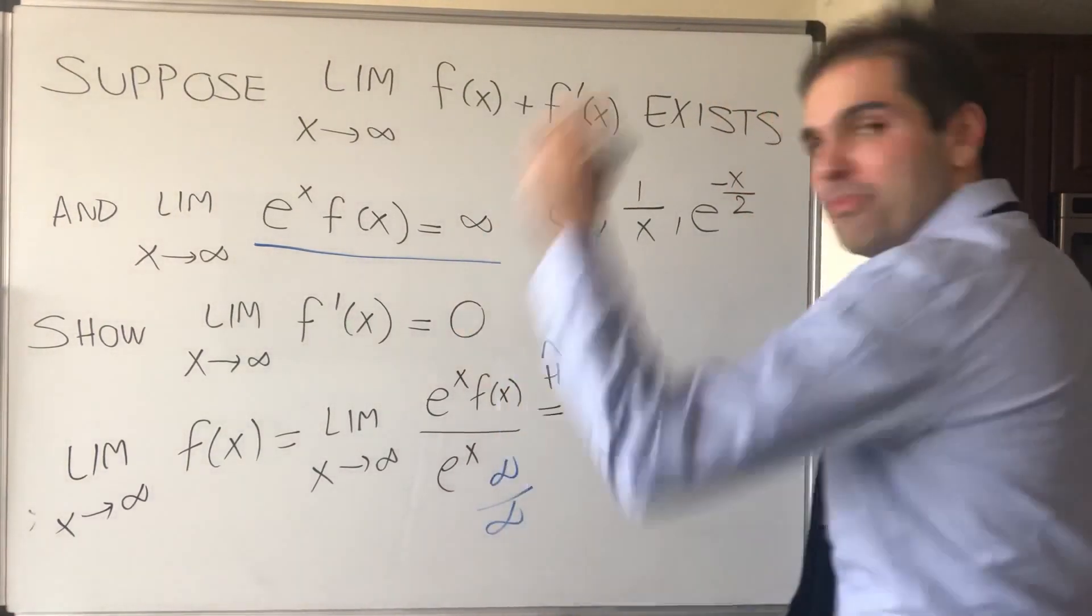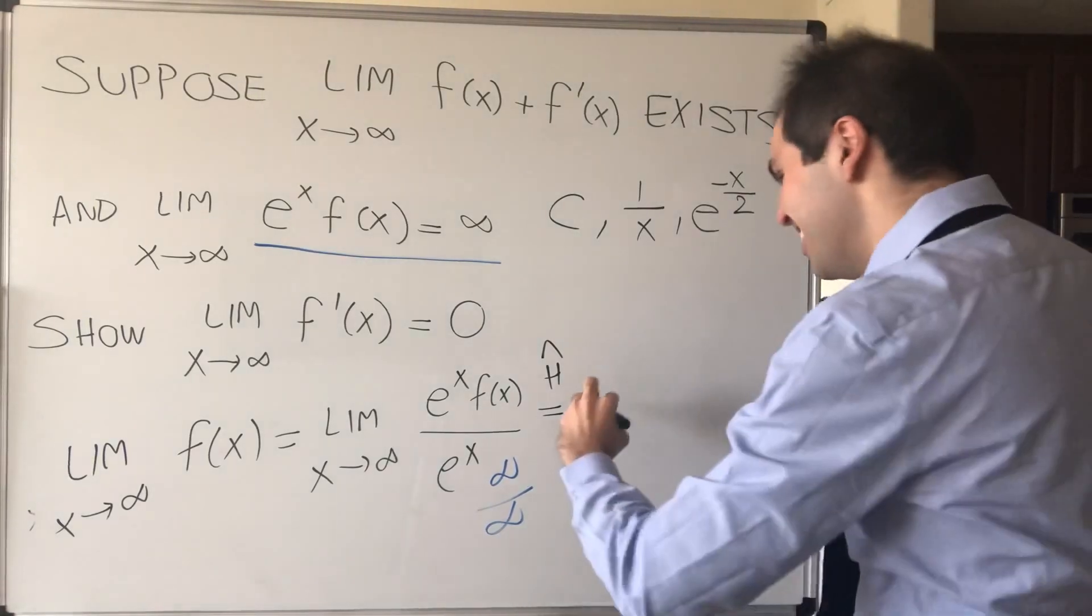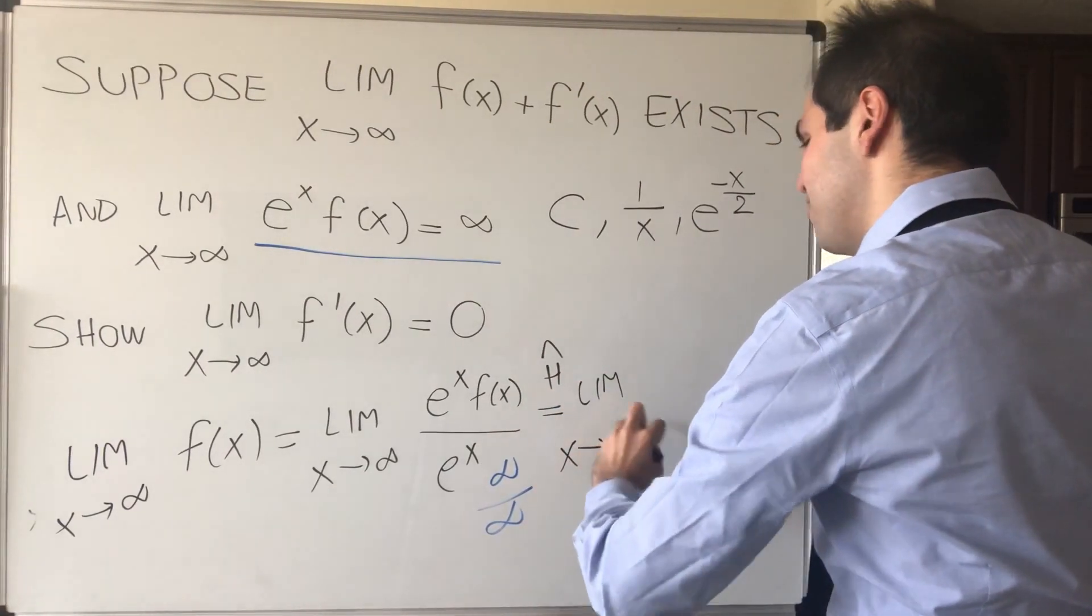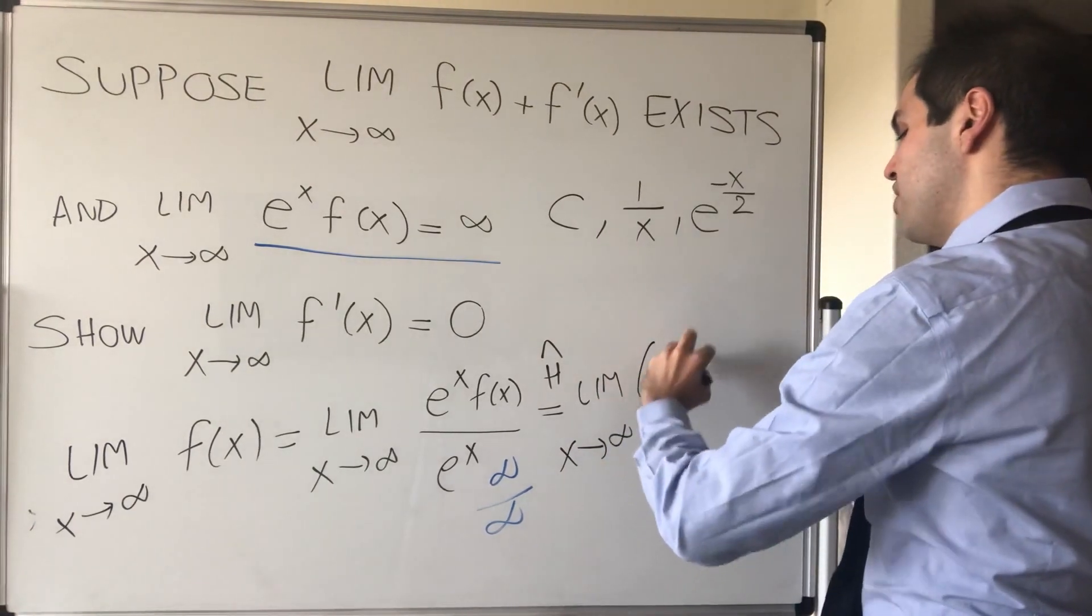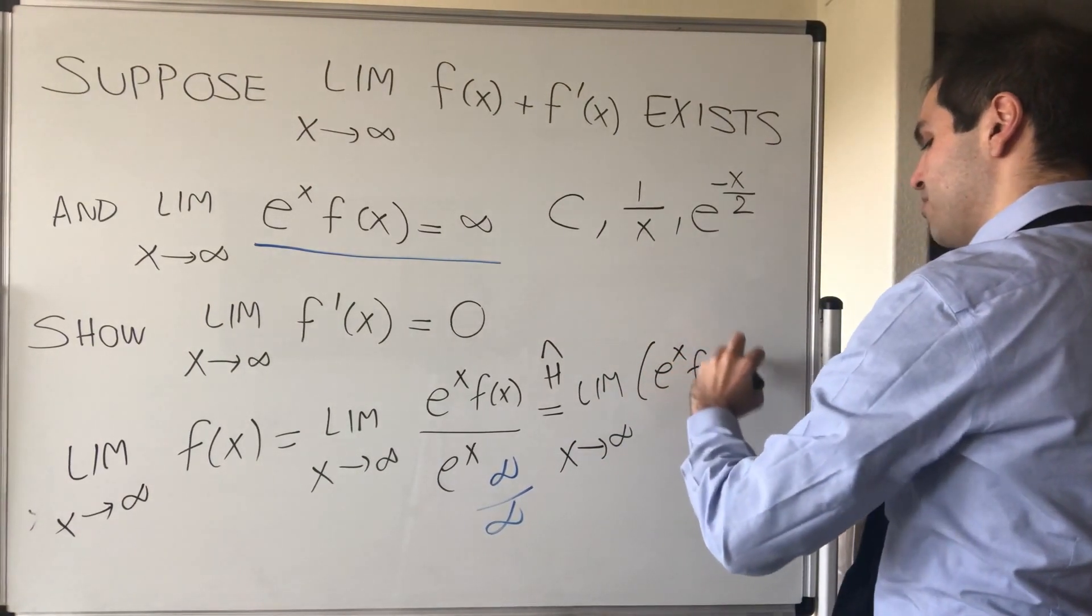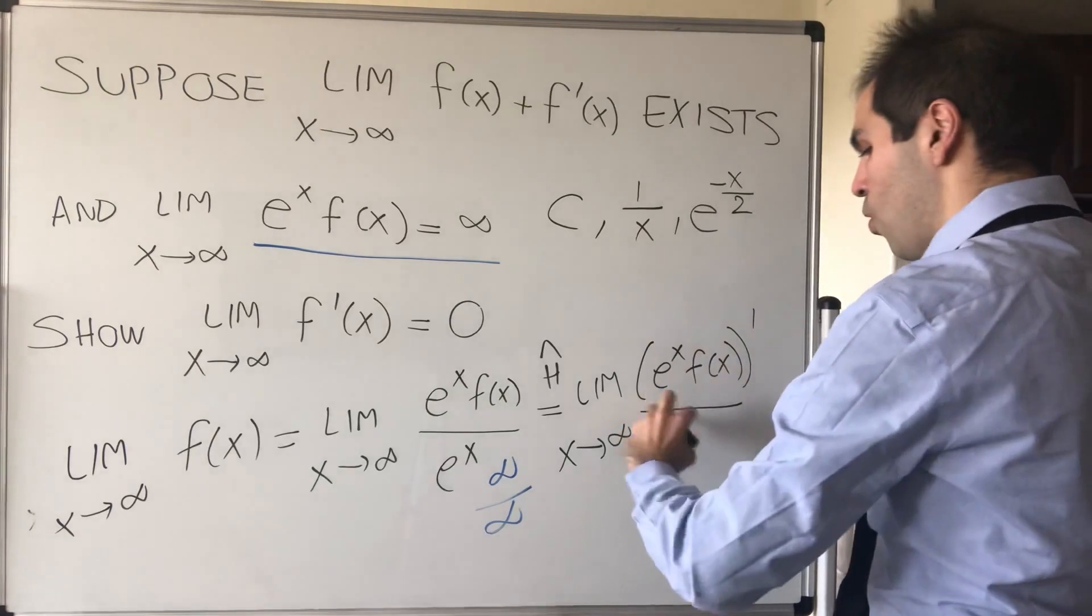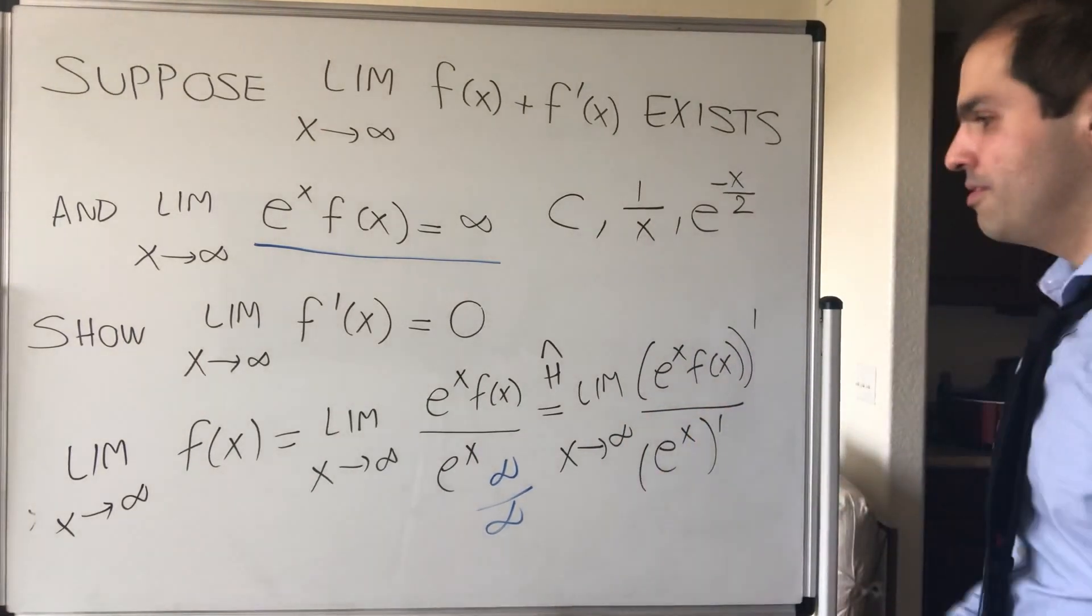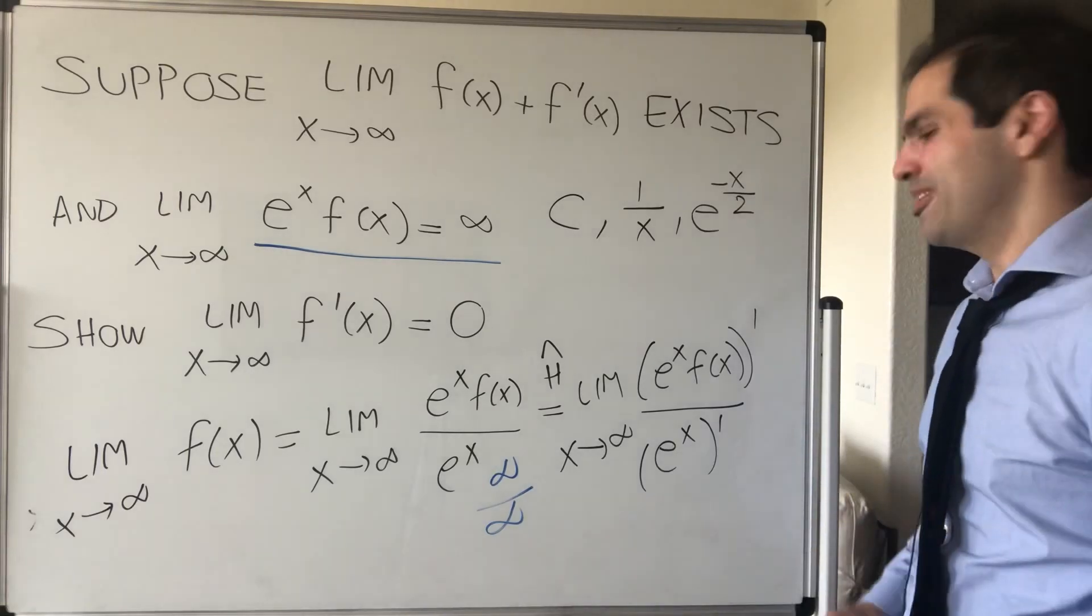this becomes the limit as x goes to infinity of e to the x f of x prime over e to the x prime. It's almost like Amazon prime.